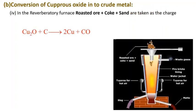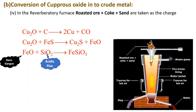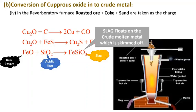Cuprous oxide is reduced by coke to produce copper and carbon monoxide. Cuprous oxide also reacts with ferrous sulfide to produce cuprous sulfide and ferrous oxide. Ferrous oxide reacts with silica (SiO₂) to produce FeSiO₃, which is the slag. Since ferrous oxide is basic, SiO₂ is used as an acidic flux. The slag has lesser density and floats on the crude molten metal, from where it is removed.